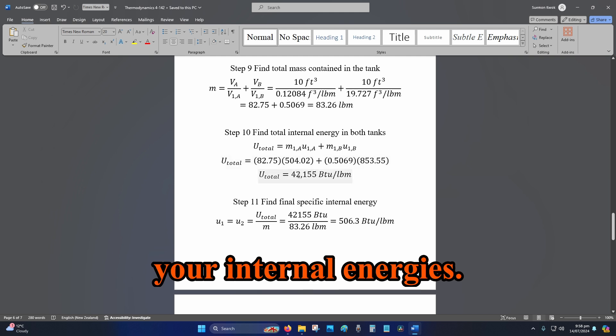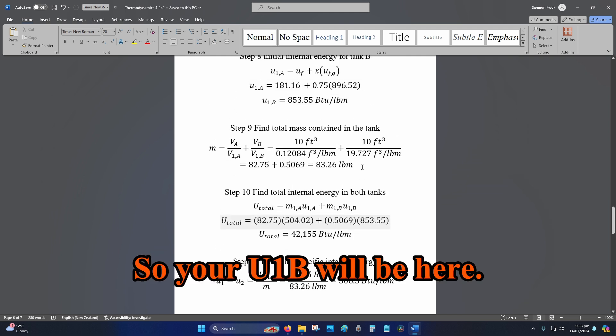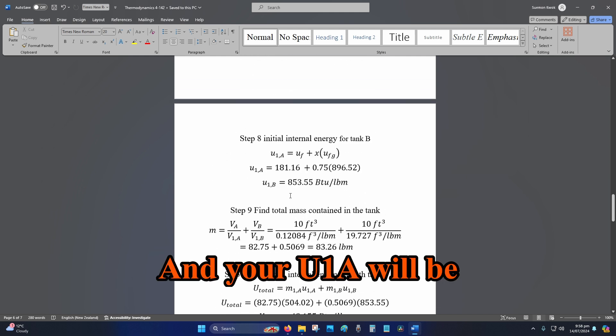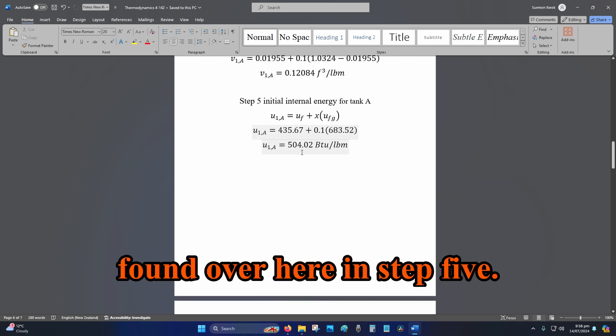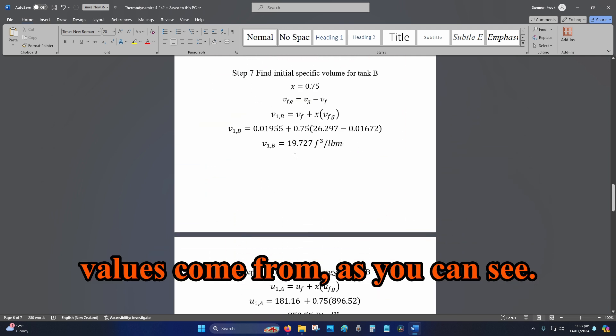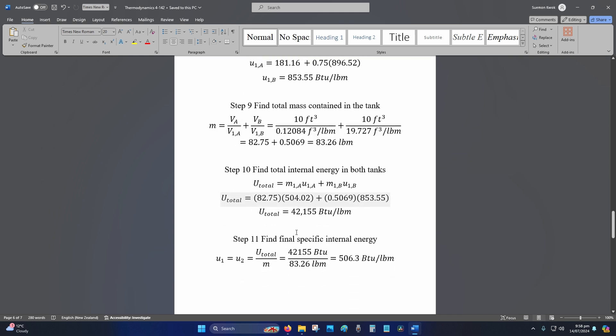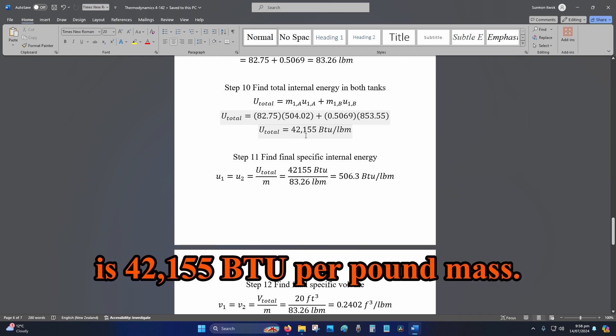And then you've got your internal energies. So, your U1B will be here. So, that's step 8. And your U1A will be found over here in step 5. So, that's where those values come from. As you can see. So, the total internal energy is 42,155 BTU per pound mass.